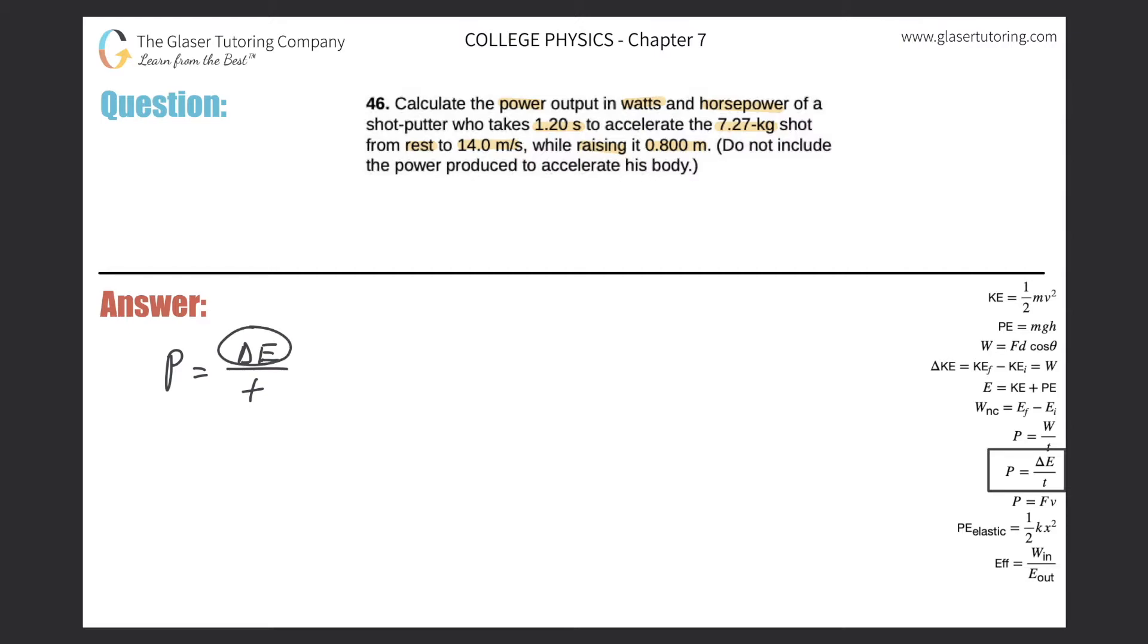I'm going to expand on the energies in the problem. Since there's a velocity and a height, I'm talking about changing not only the shot's kinetic energy, but also its potential energy, all divided by the time. Change in kinetic energy can be rewritten as one half m times vf squared minus vi squared. Change in potential energy can be rewritten as mg times the final height minus the initial height, all over time.